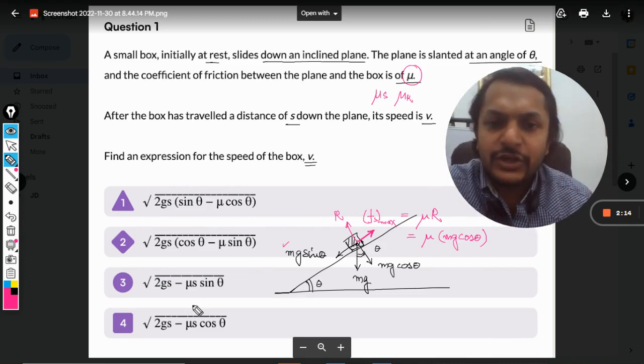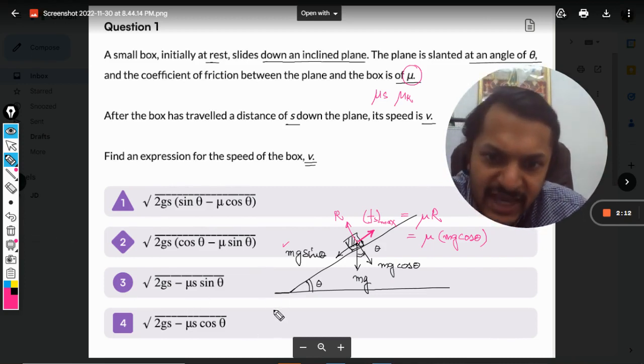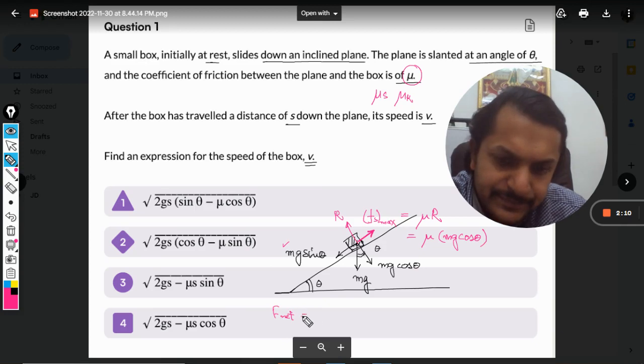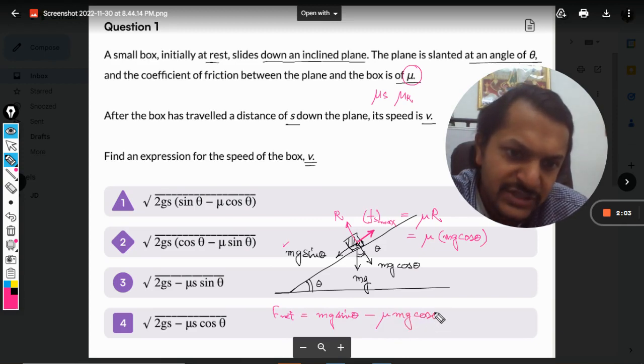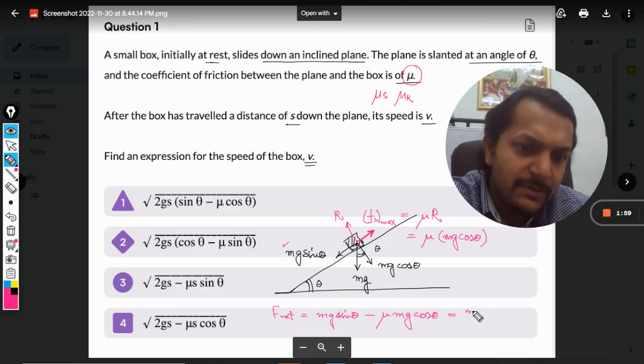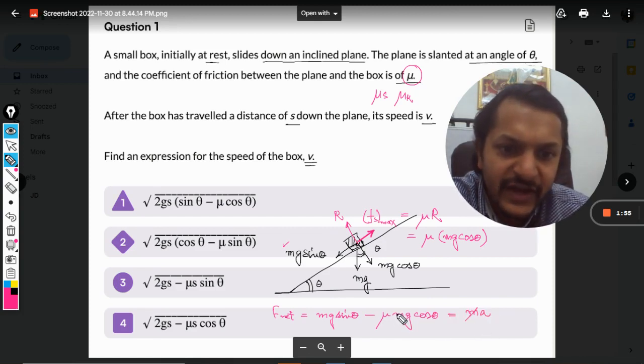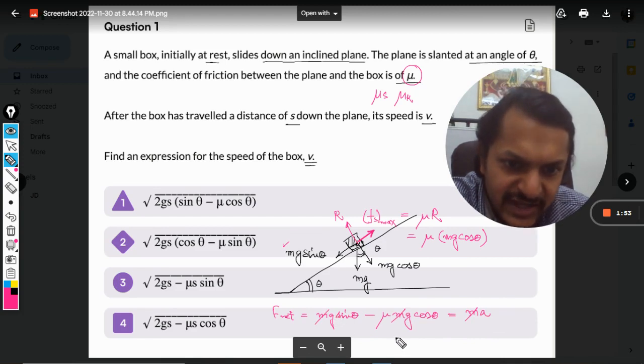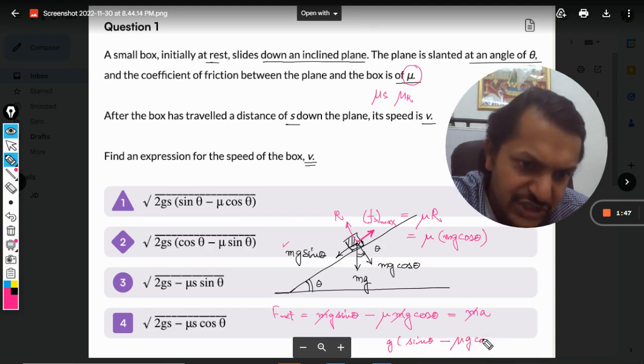Now we have to find the net force on it. So F net will become mg sin theta minus mu mg cos theta. This force will be compared with m times a. From here we'll find the acceleration. This m gets cancelled out, g is taken common, so sin theta minus mu cos theta times g becomes the net acceleration.